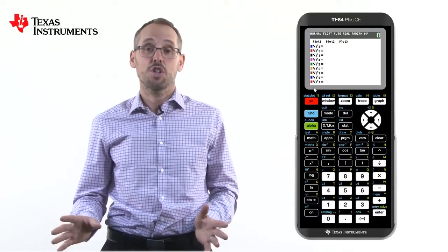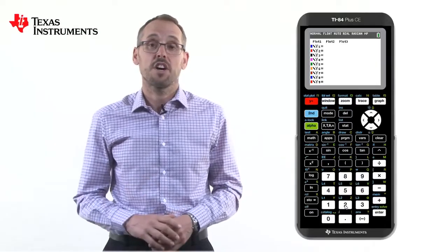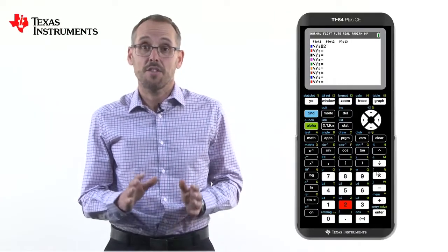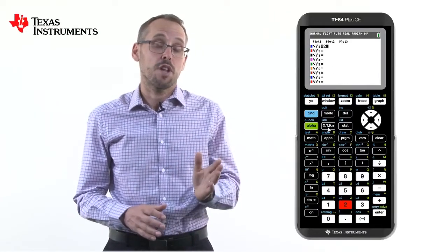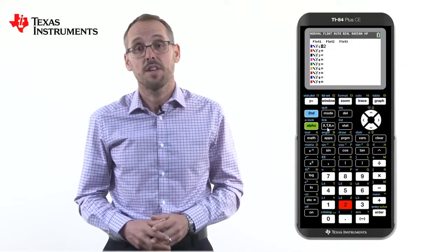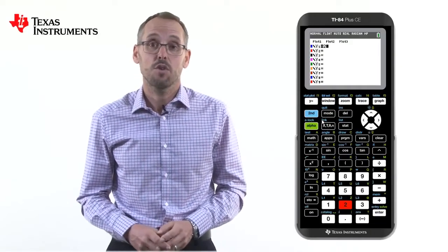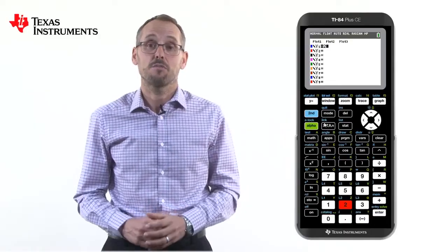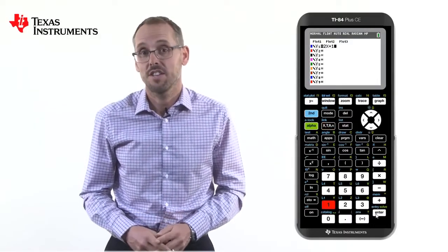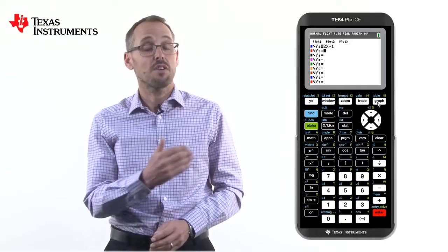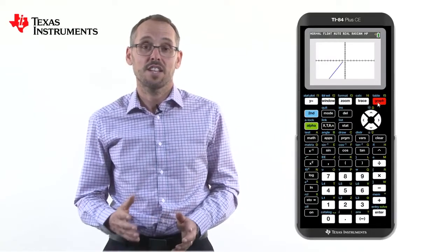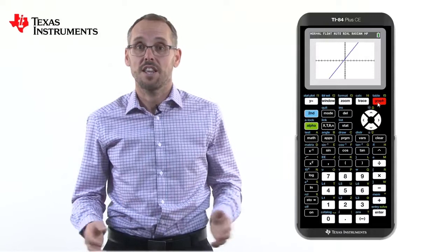Let's type in 2x plus 1. We don't need to type in times because the calculator knows that there is a multiple between the number and the variable. X is located automatically up near the second function button. So 2x plus 1 produces this equation and then, by pressing the graph button, produces this fantastic blue linear line.